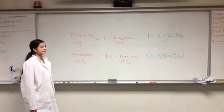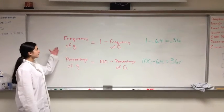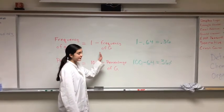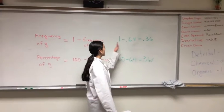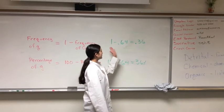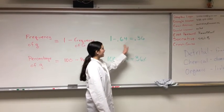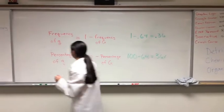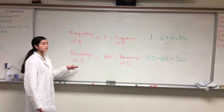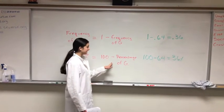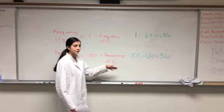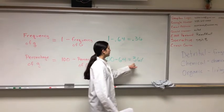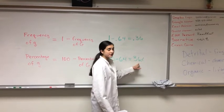Now we're going to find the frequency and percentage of little g. For the frequency of little g, take 1 and subtract the frequency you found for big G. In our case, 1 minus 0.64 gives a little g frequency of 0.36. For the percentage of little g, take 100 minus the percentage of big G — so 100 minus 64 equals 36% for the percentage of little g.